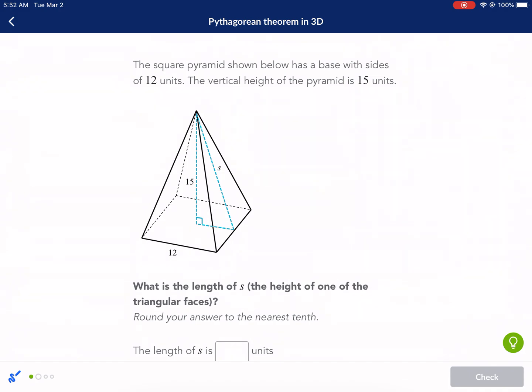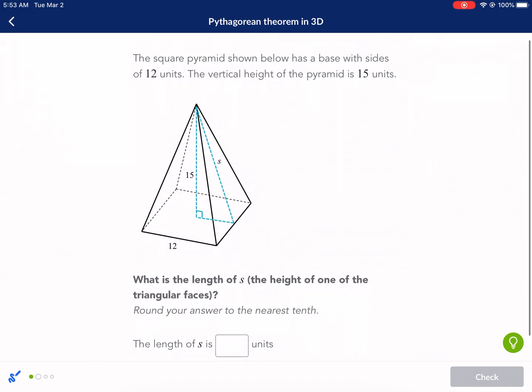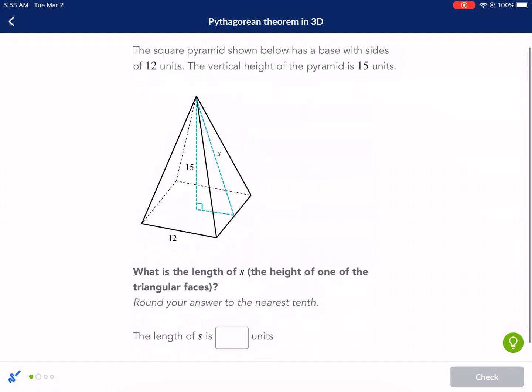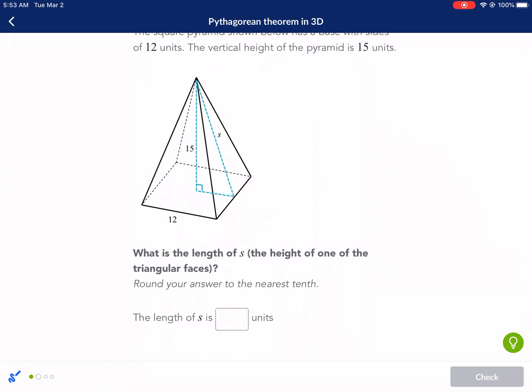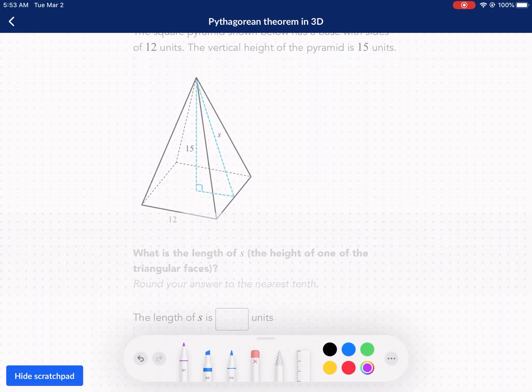Next question. The square pyramid shown below has a base with sides of 12 units. The vertical height of the pyramid is 15 units. What is the length of S, the height of one of the triangular faces?